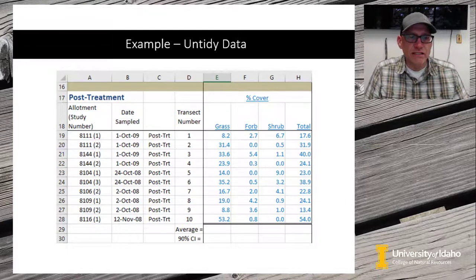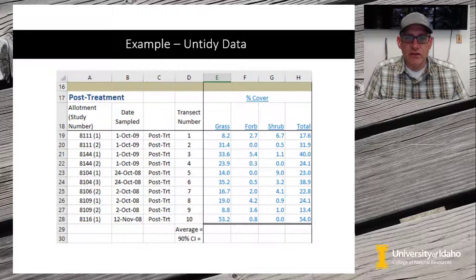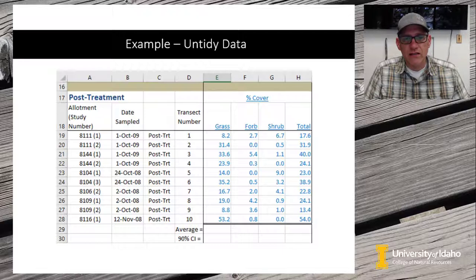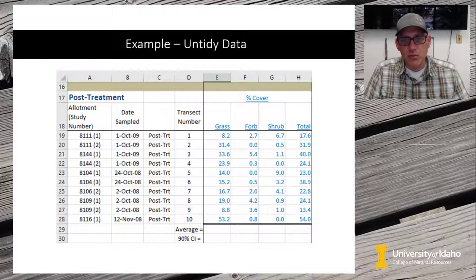Here's an example of untidy data. There are a couple of things going on that make these data untidy. First, there are extra rows in the header. This may seem like a good thing as it helps you visually separate out the different types of data, but it gets in the way of reading the data into an analysis application like SAS or R. It also has extra rows at the bottom where the results of the analysis are stored, which is dangerous because you could accidentally get results in your analysis where you really just need data. We should put these results in separate columns or ideally in separate tables.